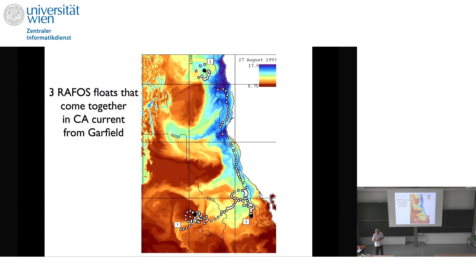Here's an example of dispersion — things coming apart. These are RAFOS floats in the thermocline of the California Current, where in color is temperature. Cold water is being upwelled here. Three different drifter trajectories: one started up here and went south, one started here and went offshore, one started here and didn't do much of anything — and they pretty much all ended up in the same area. This is a unique case.